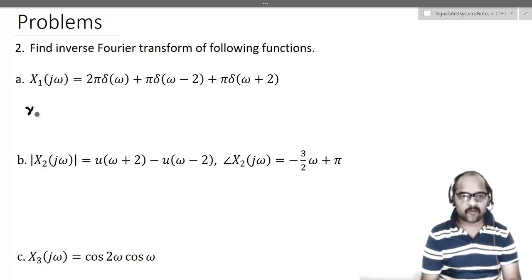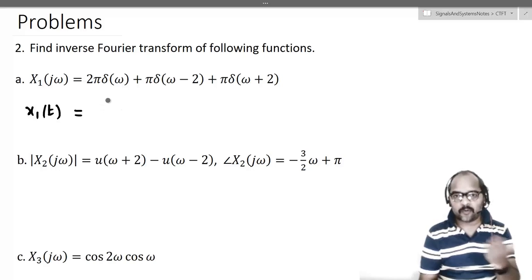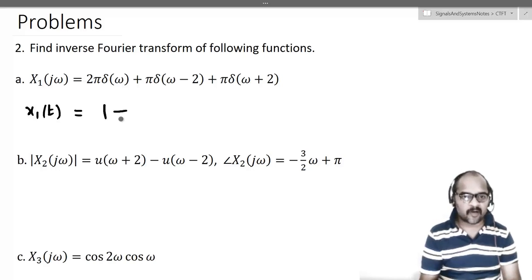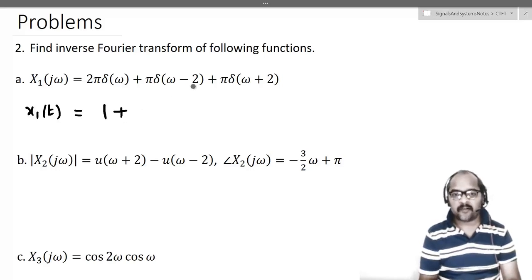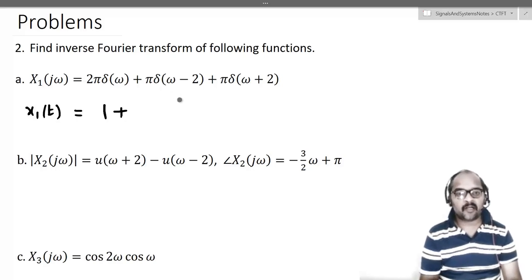What will be our x1(t)? This is a direct question. This should be equal to — which signal will have 2π·δ(ω)? That is 1. We have already seen this, and which property is involved? This is shifting in the frequency domain. So which signal will have π·δ(ω−2)?